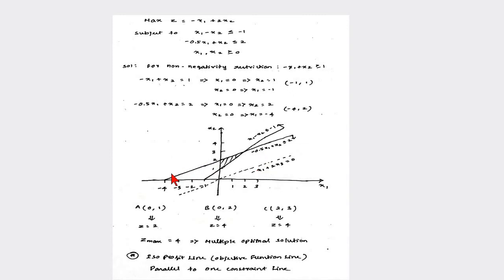The maximum value is Z=4, obtained at two points B and C. Since we get the same maximum from two different points, the answer is multiple optimal solution. Also, using the isoprofit line approach: when Z=0, the objective function line −x₁+2x₂=0 is parallel to one of the constraint lines. When the isoprofit or isocost line is parallel to a constraint line, we can conclude multiple optimal solutions exist.